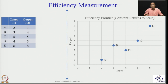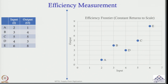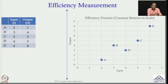Before talking about efficiency in this case study, we need to find out what efficiency is and how to measure it. We need to spend some time determining an efficiency measurement score. To explain this, let us say I have five facilities — A, B, C, D, E — with one input parameter and one output parameter.